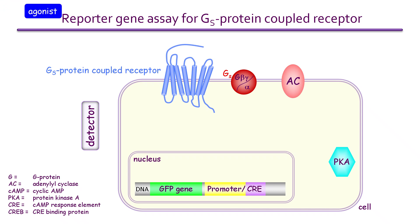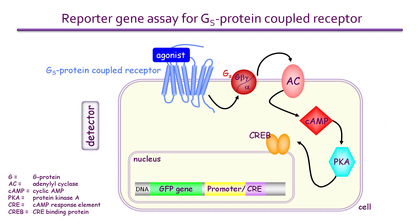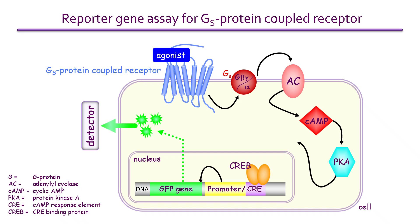Treating the cells with an agonist of the receptor causes activation of G-s, followed by adenylyl cyclase and increased synthesis of cyclic AMP. Cyclic AMP, in turn, activates protein kinase A, which has many targets in a cell, including the CRE binding protein, CREB. Upon activation, CREB translocates to the nucleus, where it binds to CRE and promotes transcription of the GFP gene, resulting in the production of green fluorescent protein. The fluorescent signal detected by a photometer gives a direct readout of the activity of the G-protein-coupled receptor.